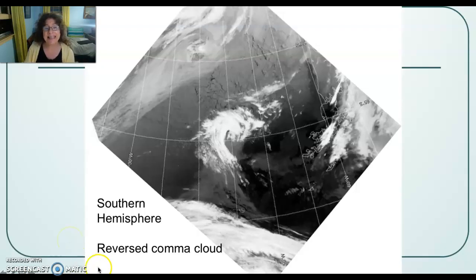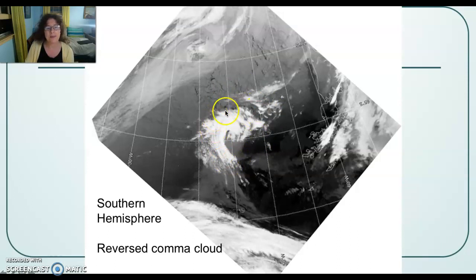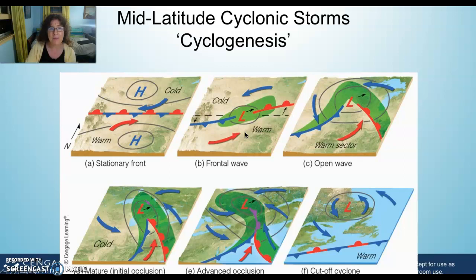A really interesting southern hemisphere example shows a storm at 65 to 70 degrees south. In the southern hemisphere, this storm is not in a counterclockwise comma — it's in a clockwise comma, right where it should be at the 65-degree mark. That reversed comma cloud confirms how southern hemisphere storm rotation differs. Review your six steps and we'll continue on the other side.